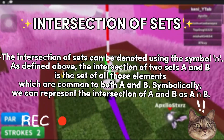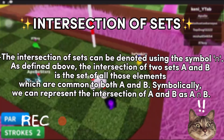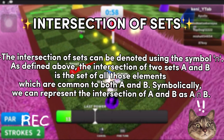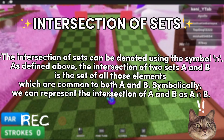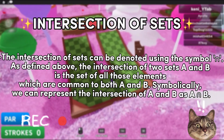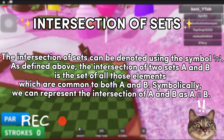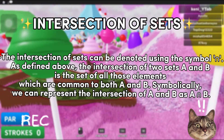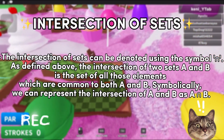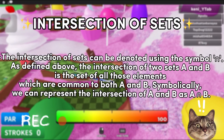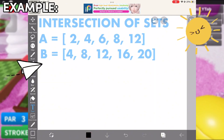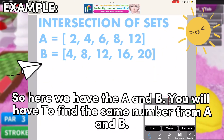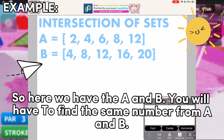The intersection of sets can be denoted using the symbol as defined above. The intersection of two sets A and B is the set of all those elements which are common to both A and B. Symbolically, we can represent the intersection of A and B as A∩B.